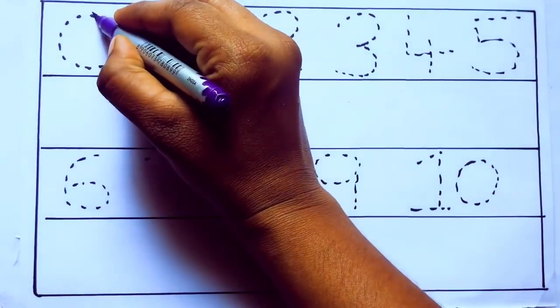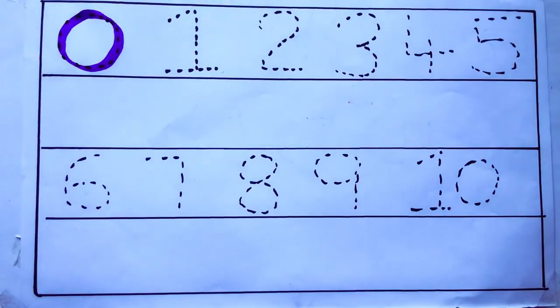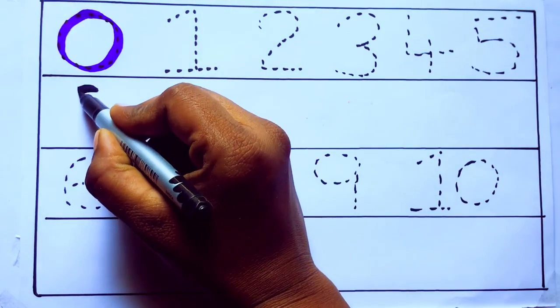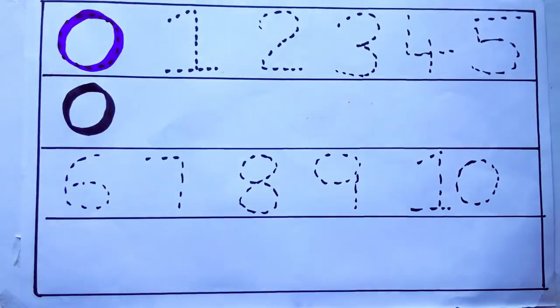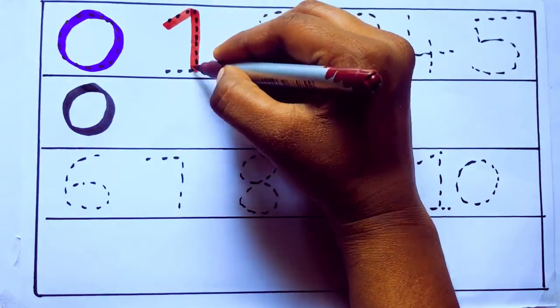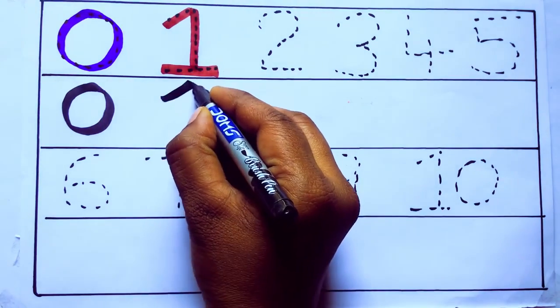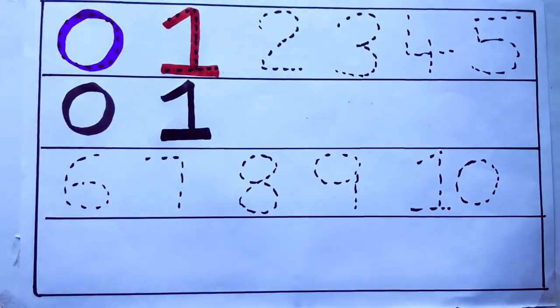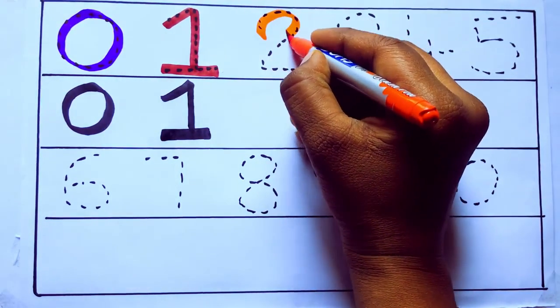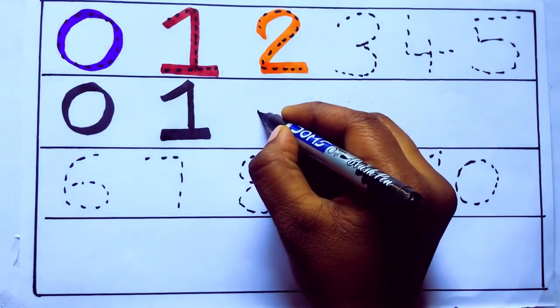Violet color 0, Z-E-R-O. Brown color 1, O-N-E. Number 1. Orange color 2, T-W-O.